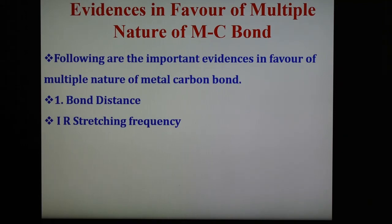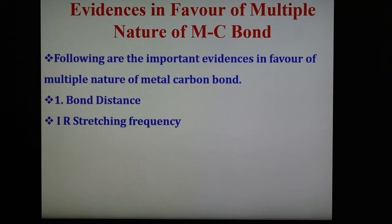The second evidence is IR stretching frequency. The IR stretching frequency for free CO is 2143 cm⁻¹, while in metal carbonyls the stretching frequency is between 2125 cm⁻¹ and 1850 cm⁻¹. This is the importance of molecular orbital theory, which explains the multiple nature of the metal-carbon bond in carbonyls on the basis of back bonding of electrons from metal to carbon and the synergic mechanism.